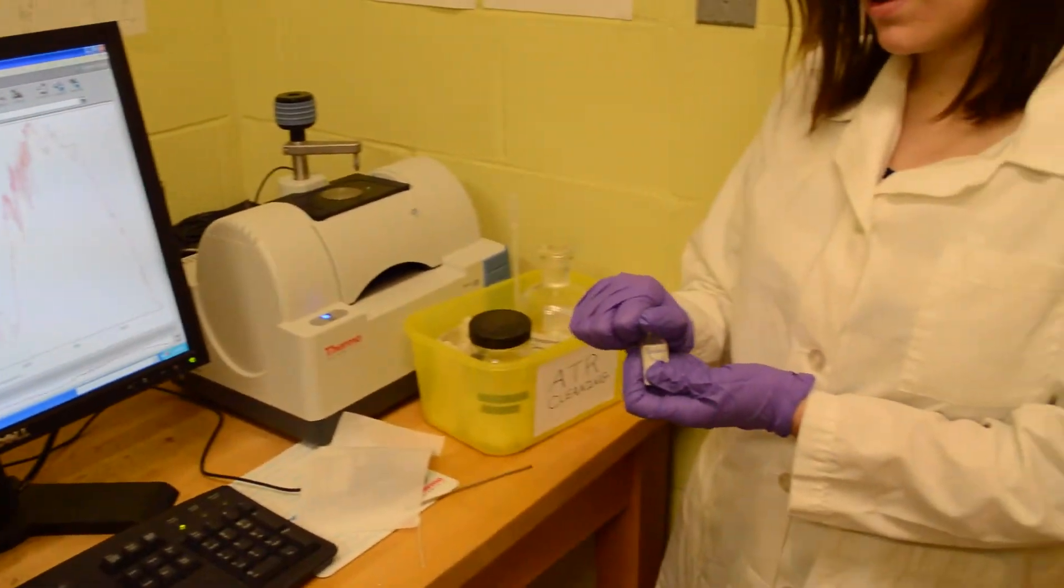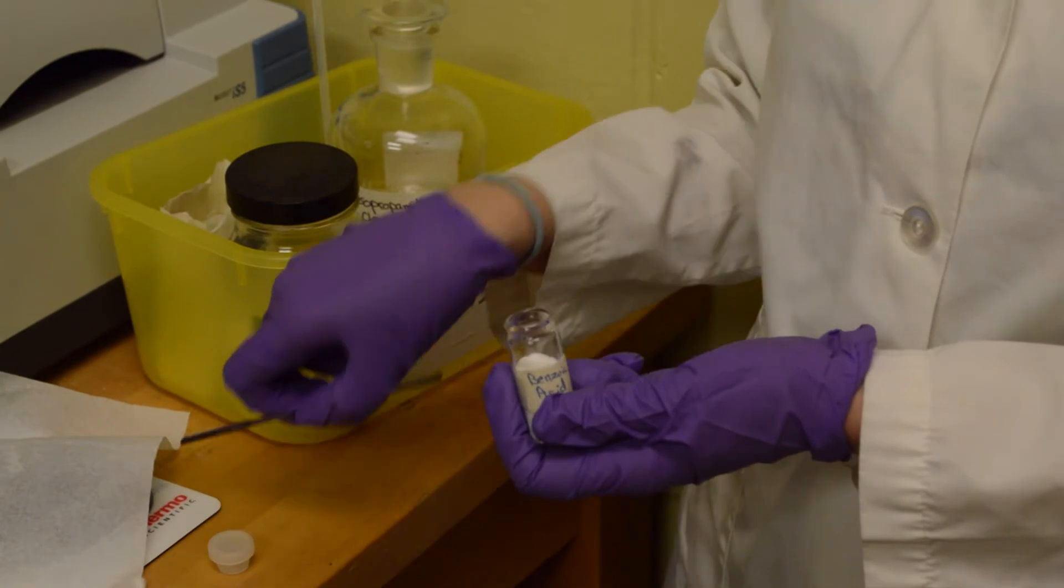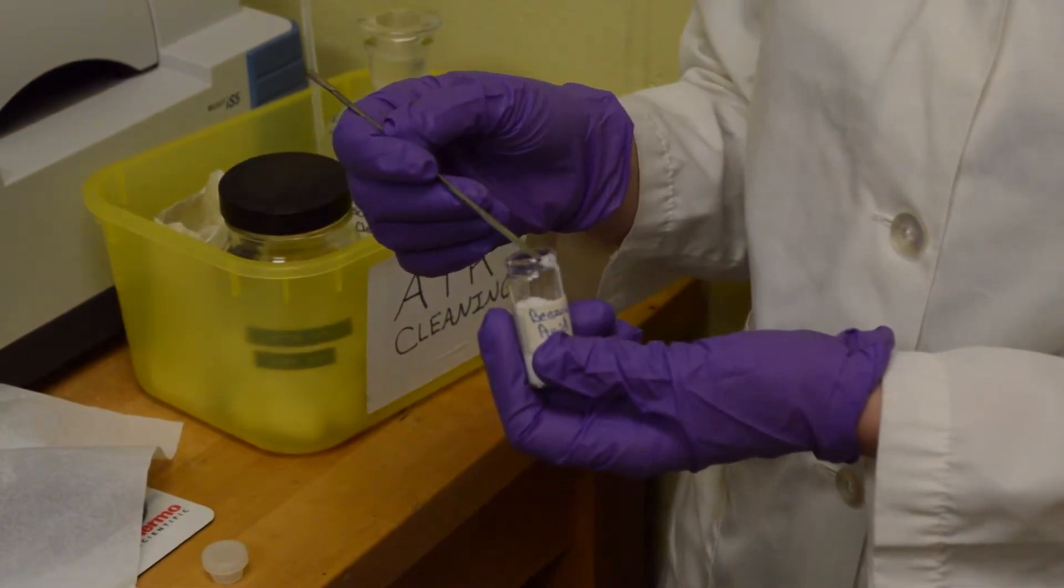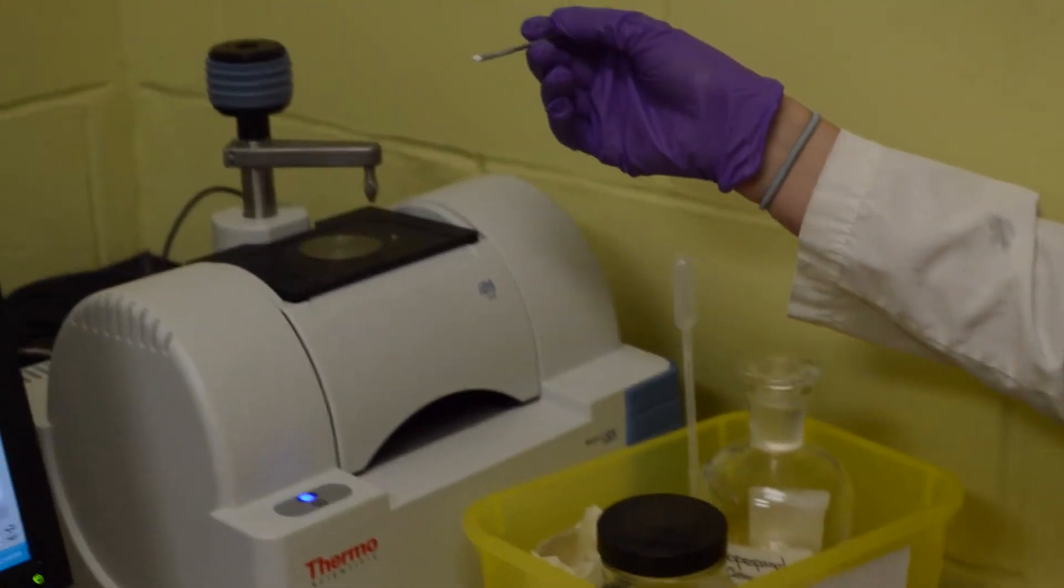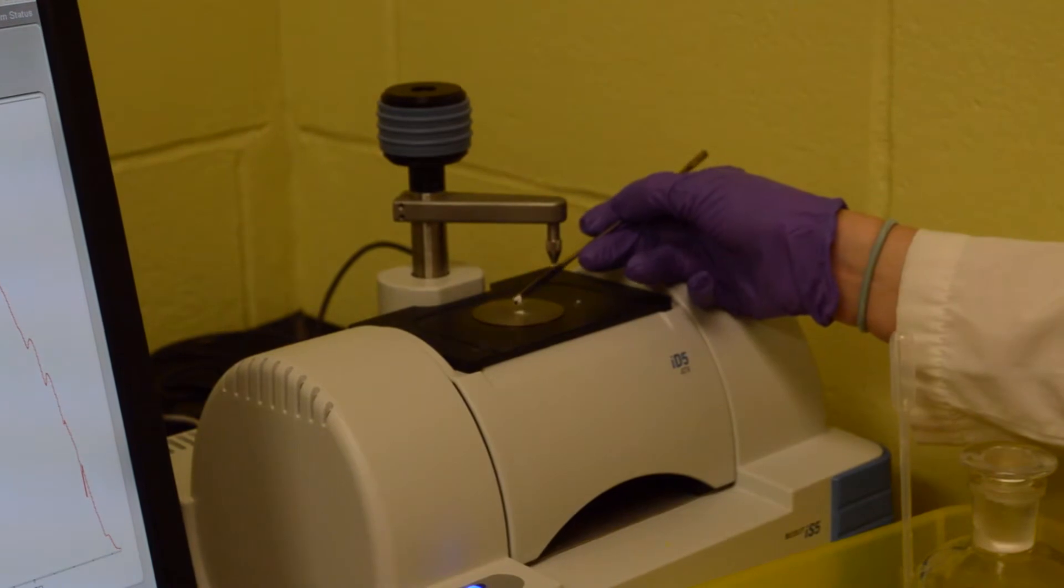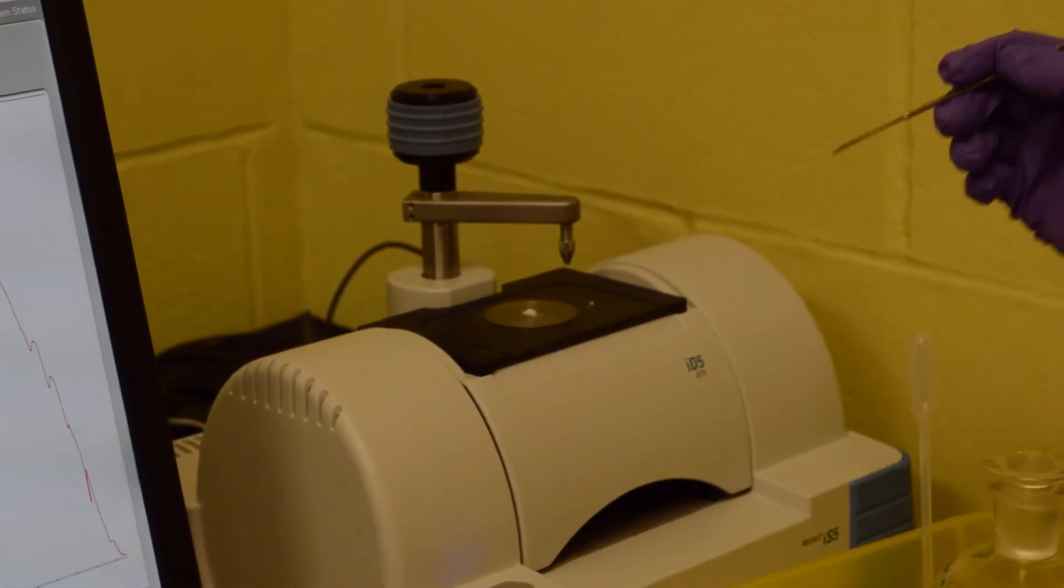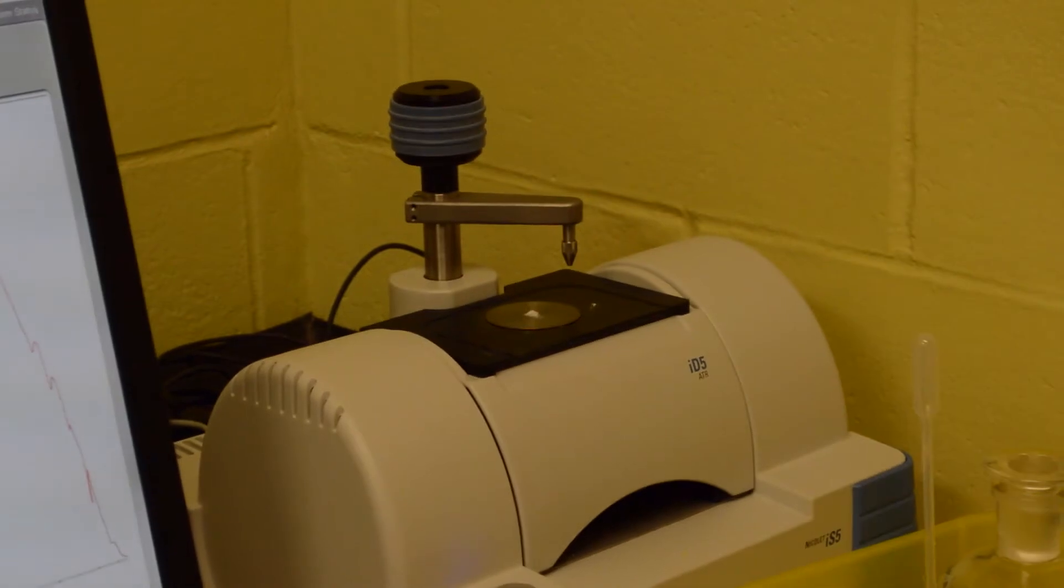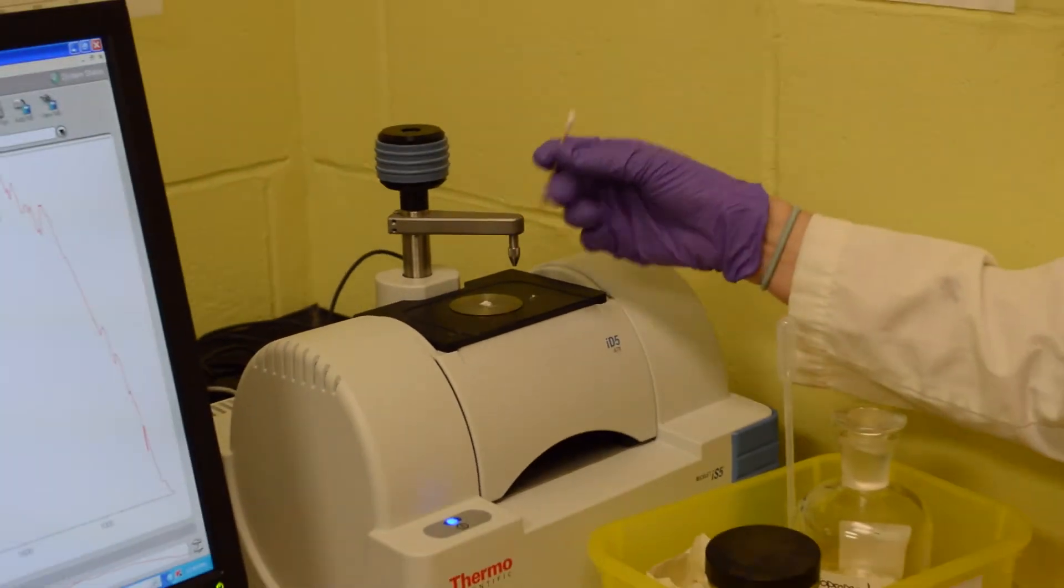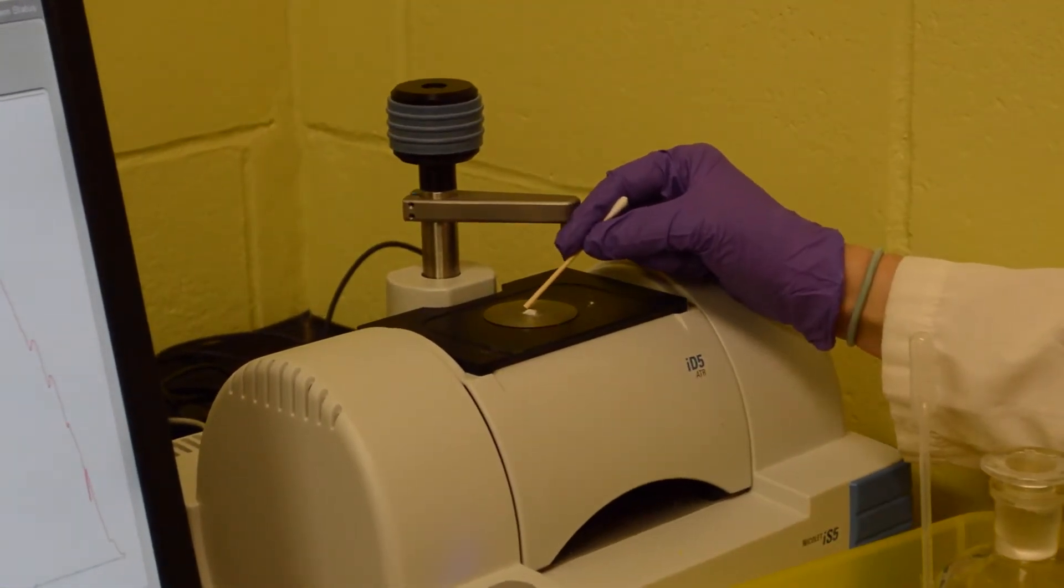So we take a small amount of sample with our little scoopula or spatula just about this much and then we want to put that on the crystal. There's a crystal right in the middle of the metal disc and you want to make sure to be very careful and not to scratch any of that equipment with the spatula. So use something a bit more dull to gather all the solid to the center crystal like the edge of a kim wipe.